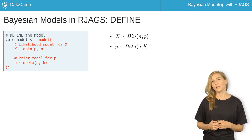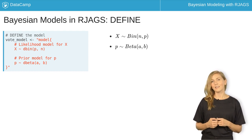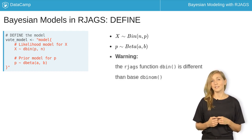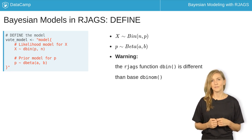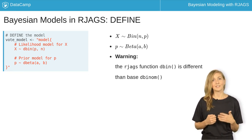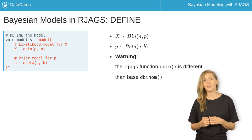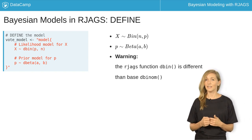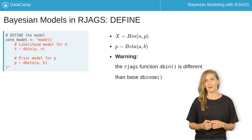If you're familiar with the dbin function in base R, you might think that there's a typo in the dbin call — the order of N and P are reversed. This isn't a typo. It's important to keep in mind that probability functions work differently in RJAGS than they do in base R.